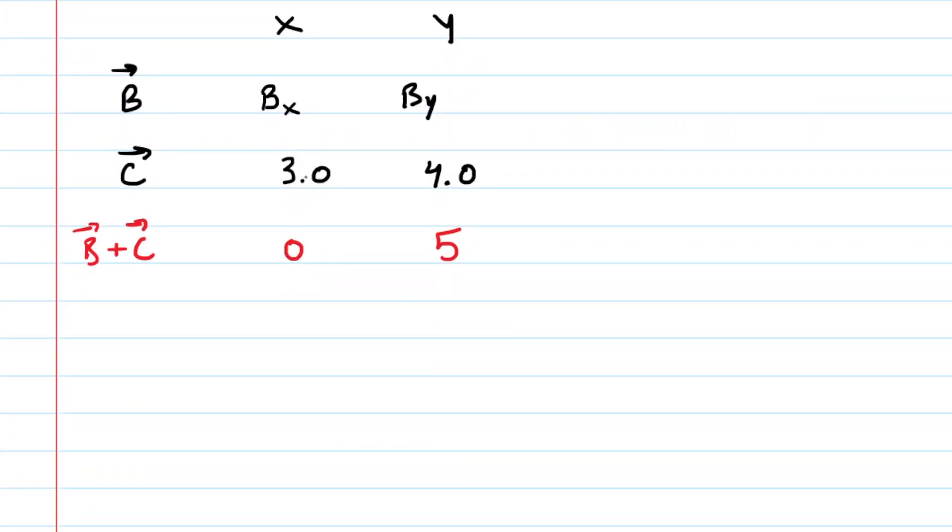Now we look at this table and we can see looking in the x column that Bx plus 3 has to equal 0, and then if we look at the y column we can see that By plus 4 has to equal 5.